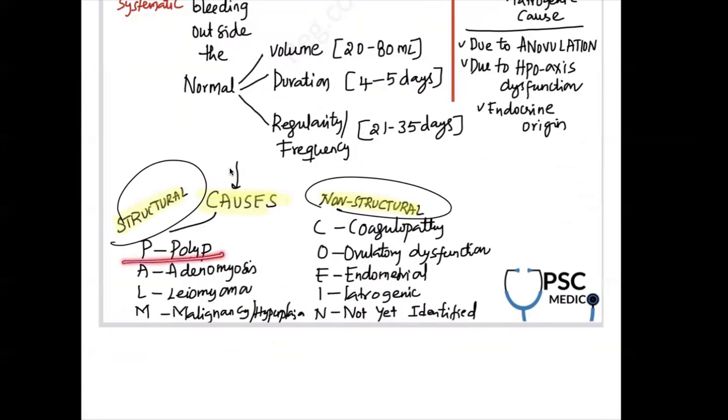Structural causes are polyp, adenomyosis, leiomyoma, and M means malignancy. This is PALM and COEIN. So you draw a palm like this and put a coin on it - PALM-COEIN classification. P means polyp, A means adenomyosis, L means leiomyoma, M means malignancy.